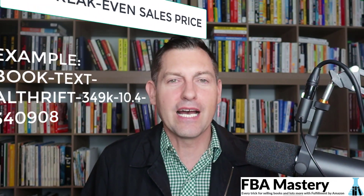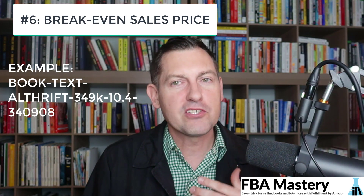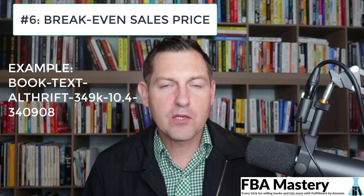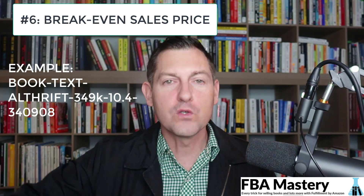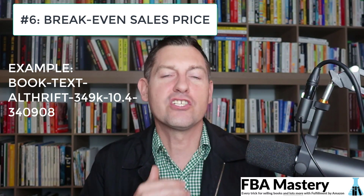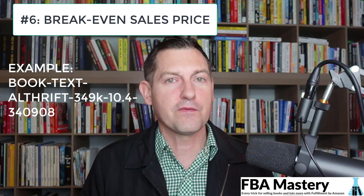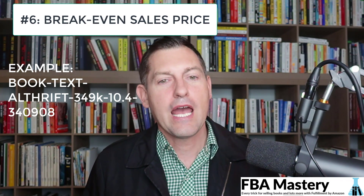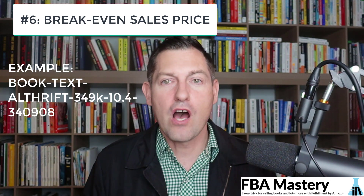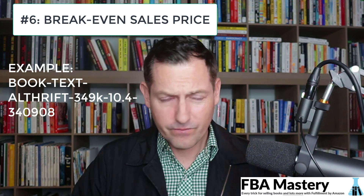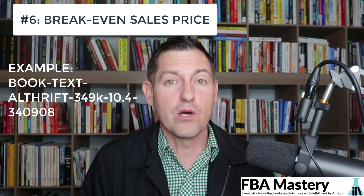Number six is your breakeven price — you'll probably want to choose either five or six rather than both. This is the price at which you'd sell an item and not lose money. If you paid $3 or $4 for an item and based on the weight and size you need to sell it for $11 or $12 to break even, you need that number readily available so you know never to price it below that amount.